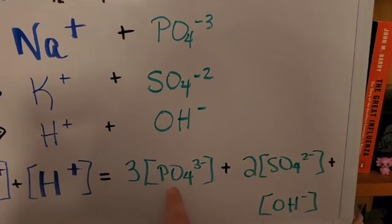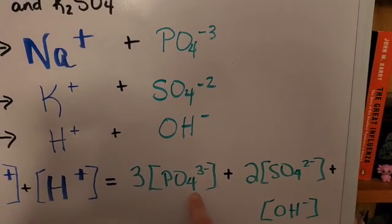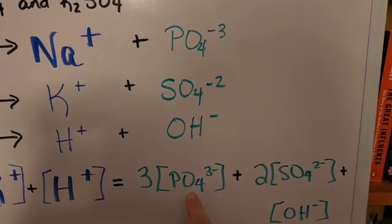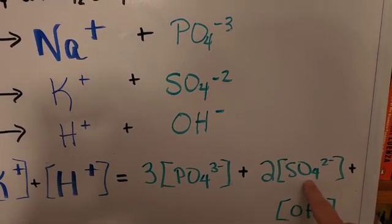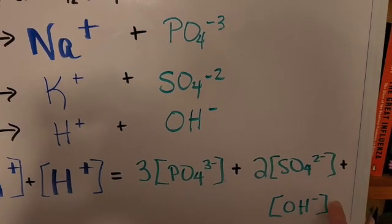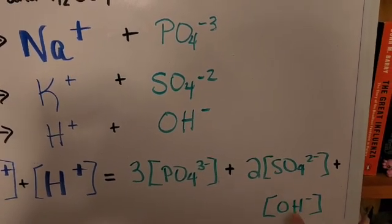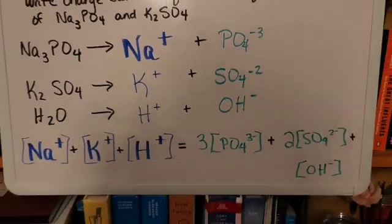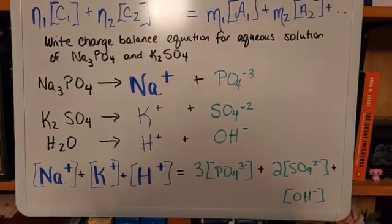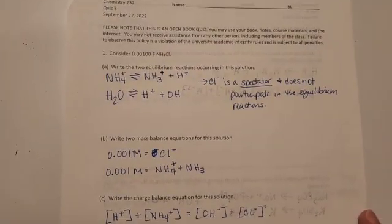So we've got three times the concentration of your phosphate here, and then two times the concentration of your sulfate there, plus the concentration of your OH negative group there. And that is how you write a charge balance equation.